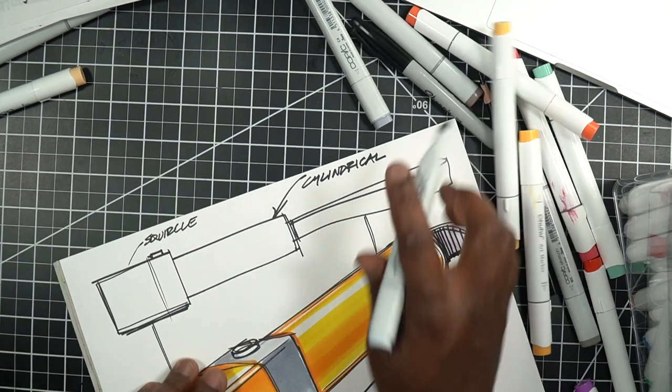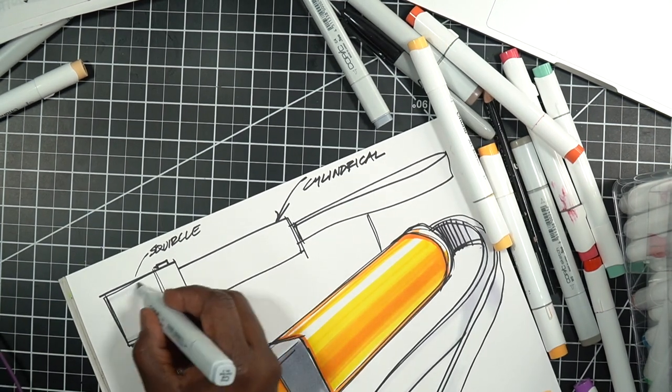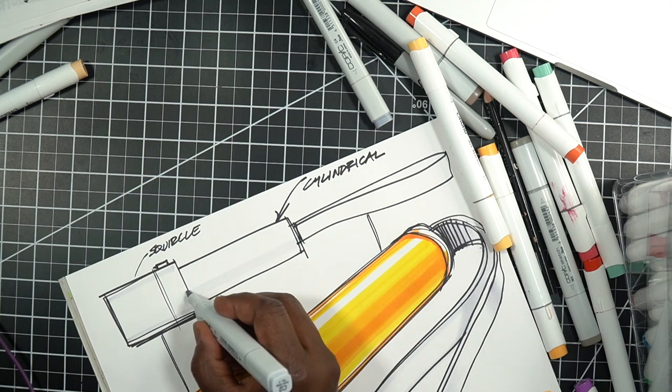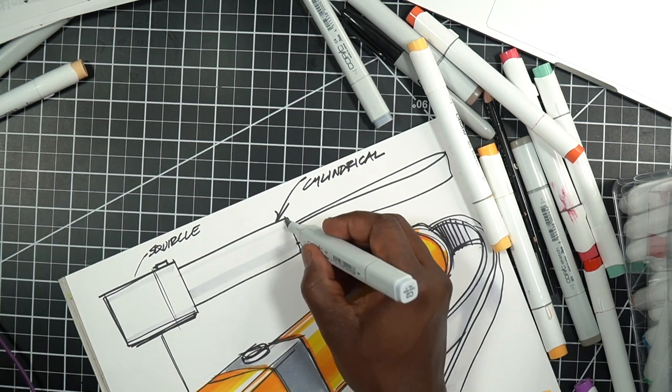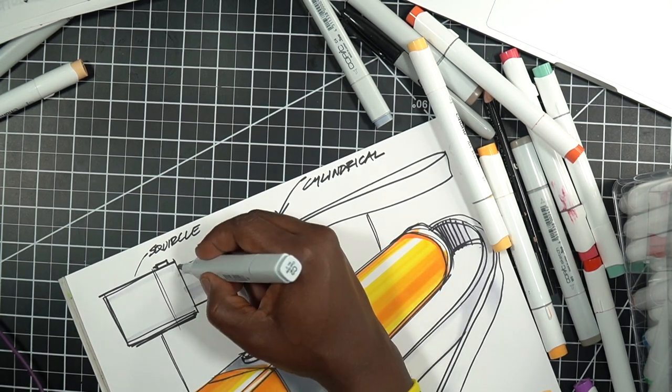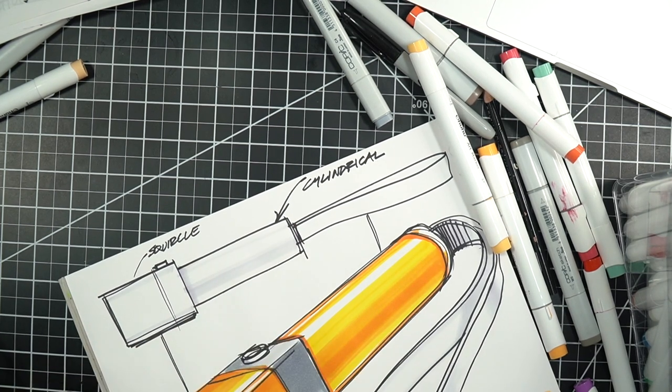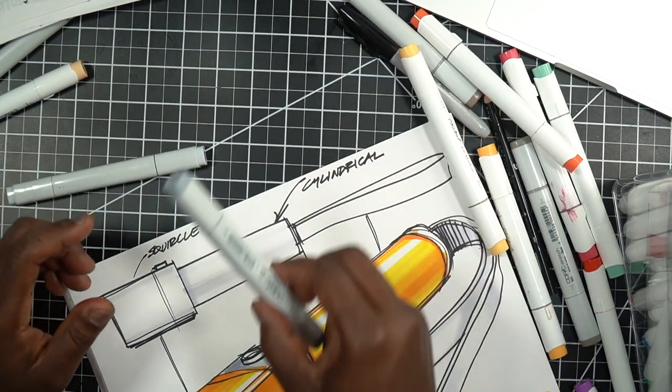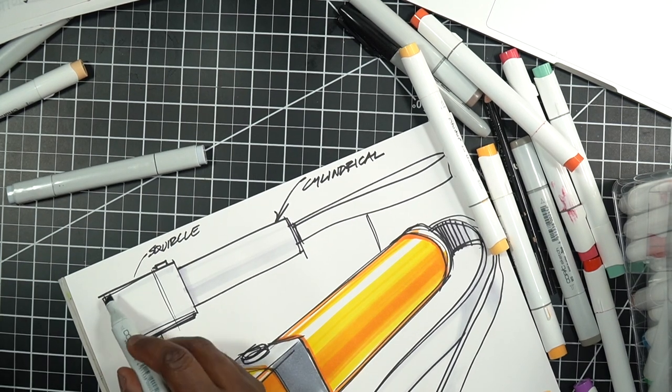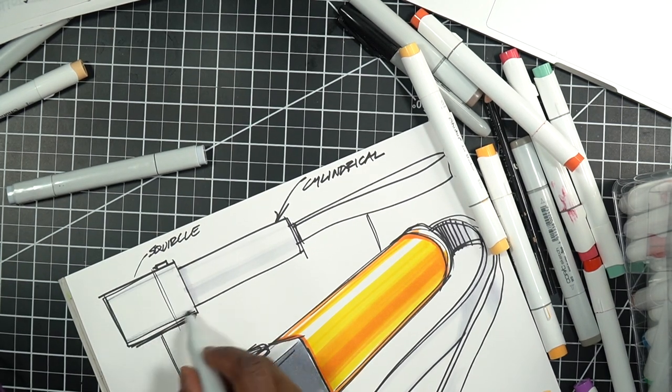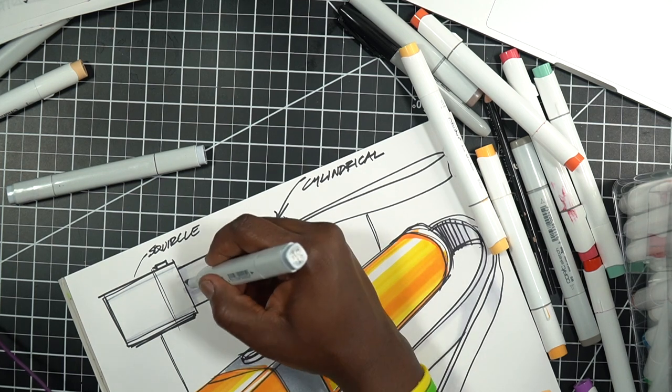Now if I have two sketches on the page, sometimes what I'll do just to move quickly is just add a little gray to the top sketch. I believe there was a question earlier about minimal marker, so here's an example of some very minimal marker, just enough to identify or show what the general form story is here.